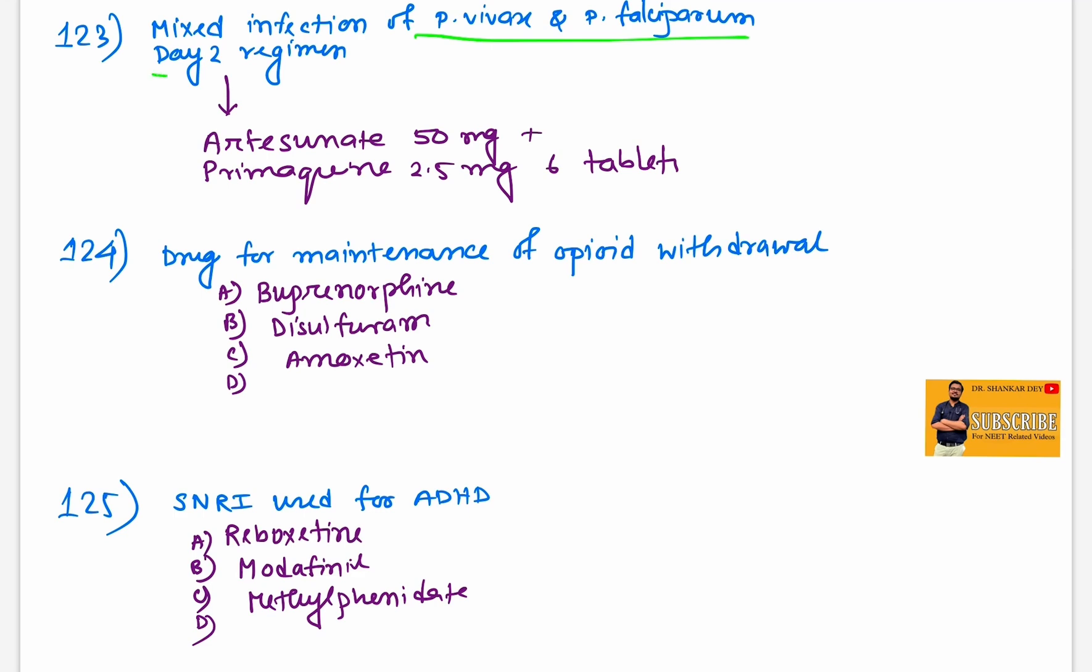Day 2 regimen, they ask for day 2 treatment. It will be artesunate 50 mg with primaquine 2.5 mg, 6 tablets total, so 15 mg OD for 14 days. Artesunate 50 mg with primaquine will be the best combination for mixed infection with vivax and falciparum on day 2.